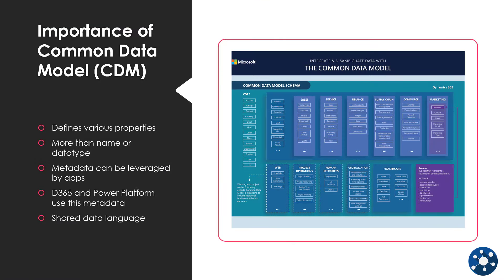Let's understand why the Common Data Model is important. The Common Data Model defines various properties of tables, columns, and relationships — more than just the name or data type. They include the range of values, display names, and traits such as whether they are editable, mandatory, or can be set to null values. This metadata can be leveraged by apps to affect how users interact with the data. Dynamics 365 and Power Platform apps make use of this metadata to control and improve the user experience.